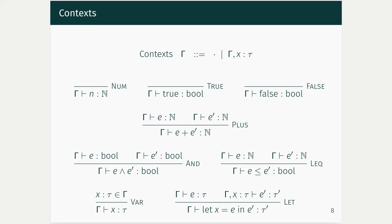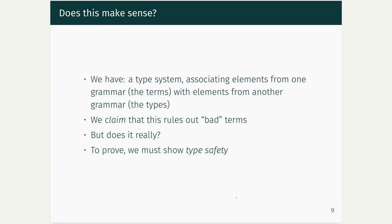This looks like a really nice type system, and it's totally going to type check arithmetic and boolean expressions. Now you look at it and say it's obvious that this is a good thing — but how do we prove it? We really want to say that no bad terms are left in this type system. In order to prove that bad terms are ruled out, we have to prove what's called a type safety result. This is going to be a proof that whenever you have a well-typed program, it's always going to do something sensible rather than getting stuck on something incomprehensible.